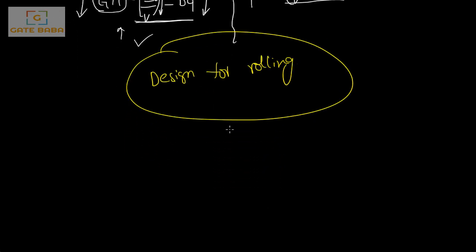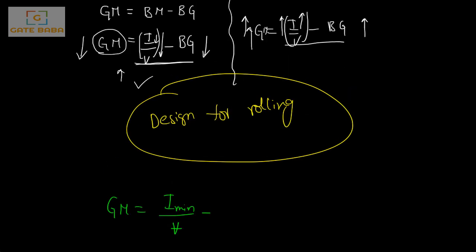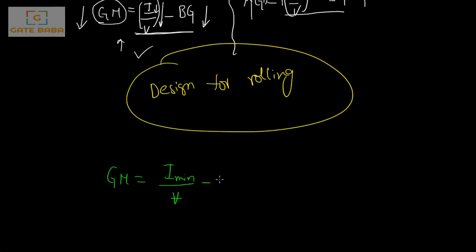The moral of the story is: design for rolling. The final formula is GM = I_min / V − BG, where BG = H/2 − h/2 for cylindrical or cubical bodies.